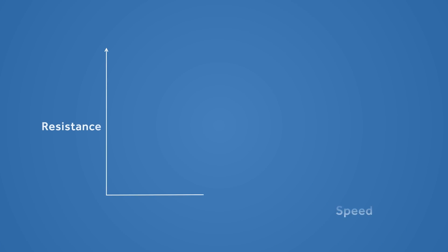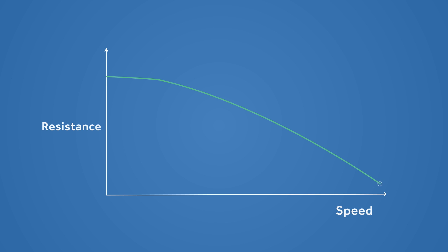Through research, it became clear there is a relationship between speed and resistance. For example, when a power chair goes over a rug, the speed is low but the resistance level is high, as it is a challenging surface. When a power chair travels along a flat path, the speed is high but the resistance is low. The power chair needs to be able to adapt to each situation.